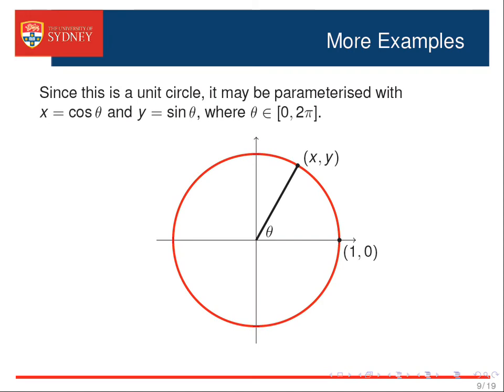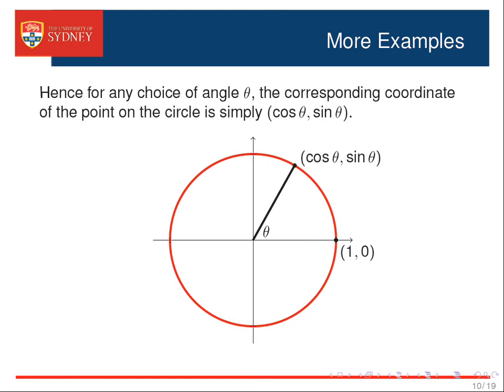Since the circle is a unit circle, it may be parameterized with a pair of parametric equations x equals cosine theta and y equals sine theta, where theta runs from 0 to 2pi. Hence, for any choice of angle theta, the corresponding coordinate of the point on the circle subtended by that angle is simply cosine theta, sine theta. Of course, this link between circles and trigonometry should come as no surprise, as this unit circle construction actually forms the basis for the definition of cosine and sine for angles of any magnitude.